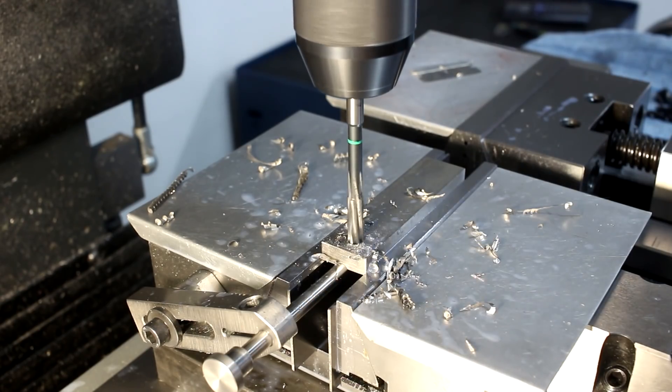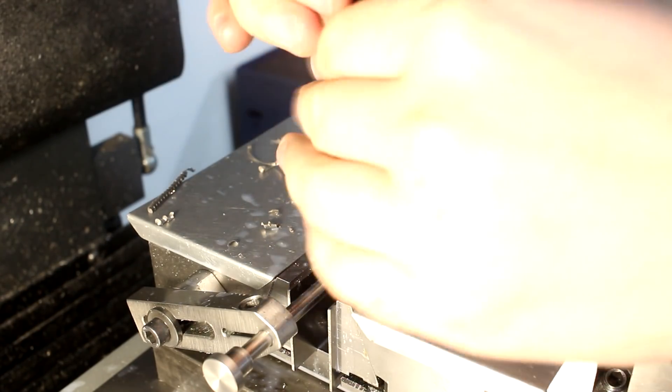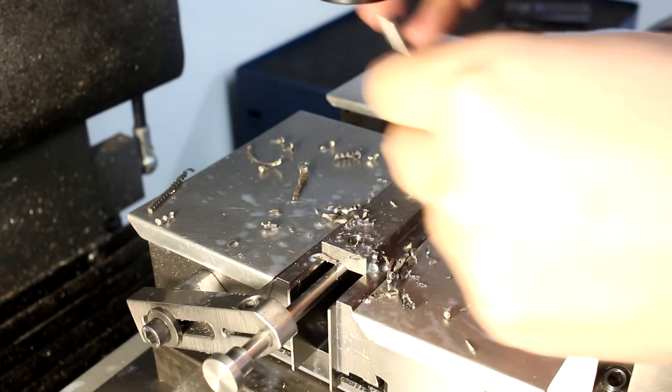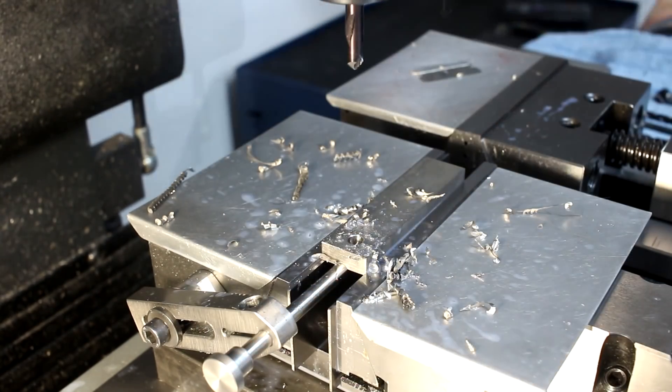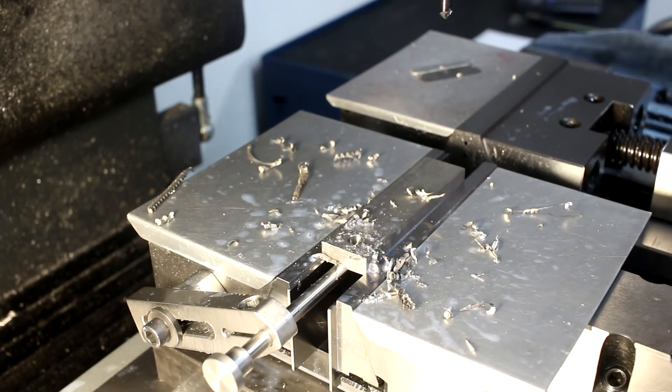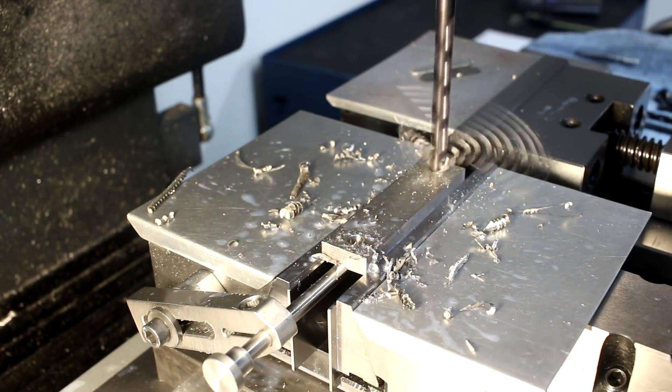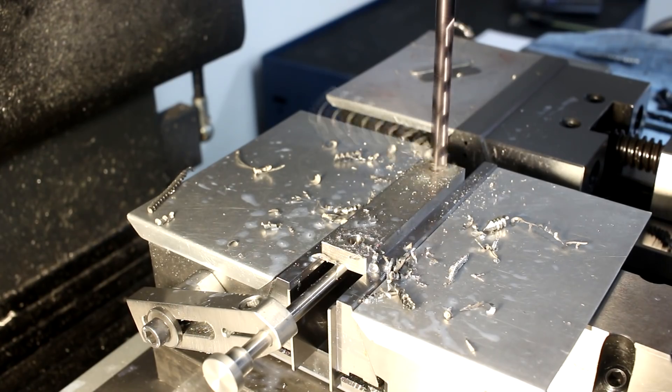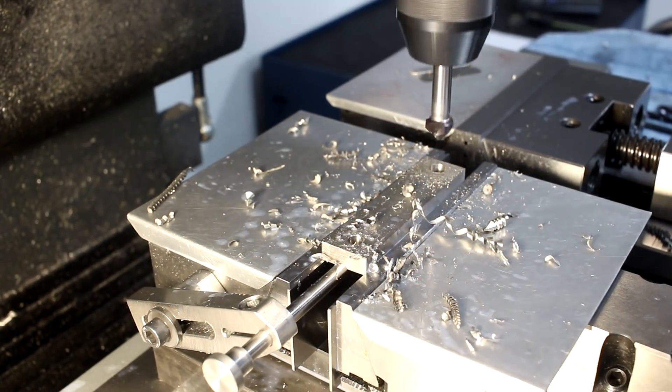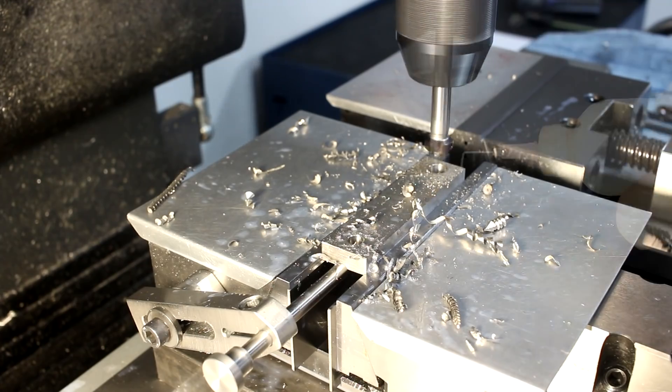And then the same story again for the other hole, diameter 8H7. Spot drilling, drilling, countersinking and reaming.